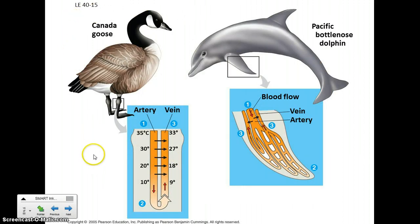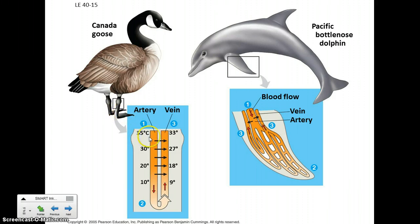An interesting feature we have, particularly with our extremities, is countercurrent heat exchange. We attempt to keep our core relatively warm, like a bird or dolphin. As blood flows out to the extremities it gets cooler — for example, a Canada goose standing on an icy lake will have quite cold feet. That blood cools down as it flows out through the arteries. But with the veins flowing back, the blood absorbs heat and is warmed up as it returns to the core. This keeps us from losing too much heat in our extremities and helps maintain core warmth.